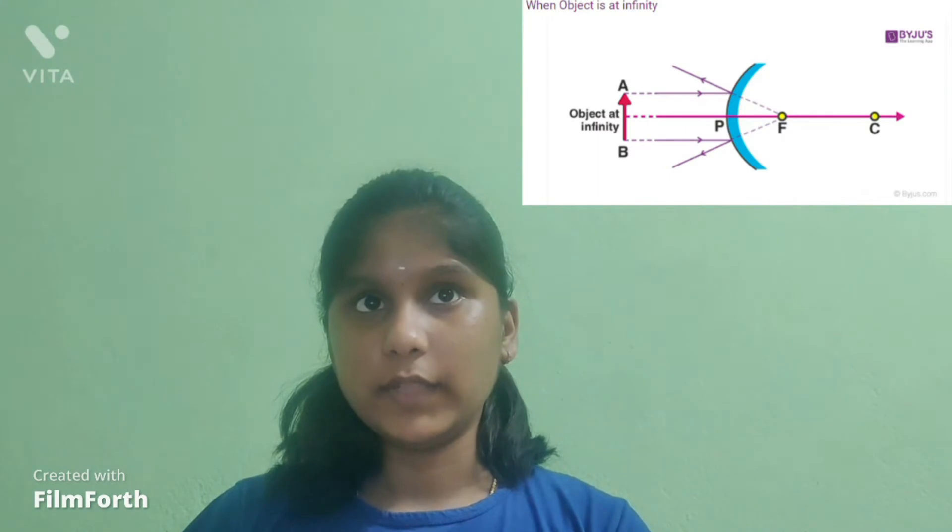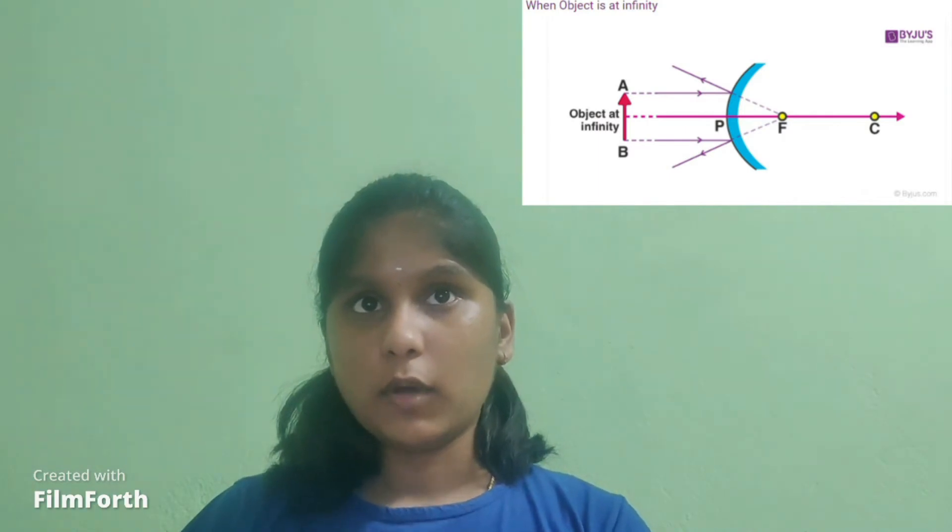Image formation by convex mirror. There are two possibilities related to the position of the object in a convex mirror: when the object is at infinity, and when the object is between infinity and the pole.